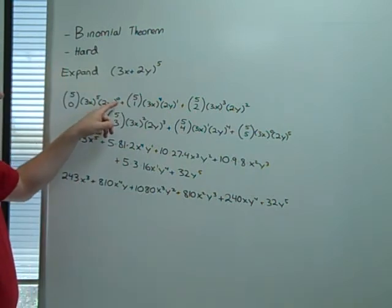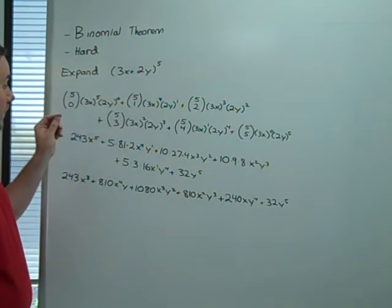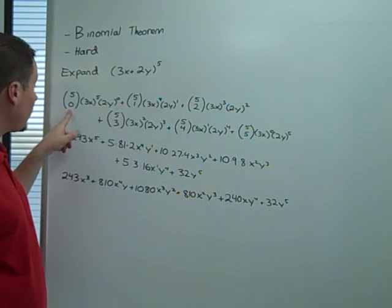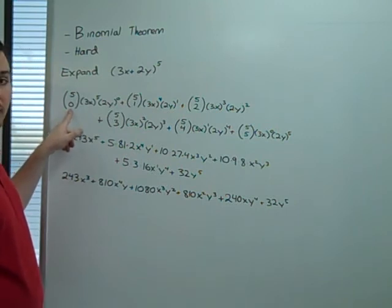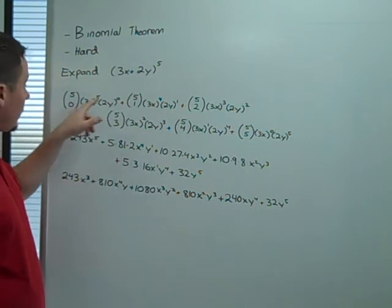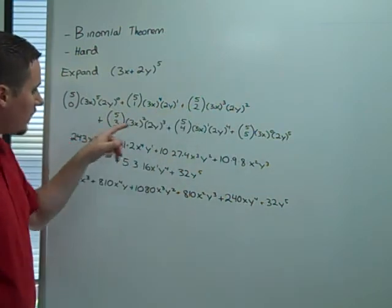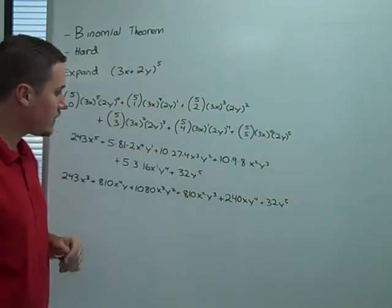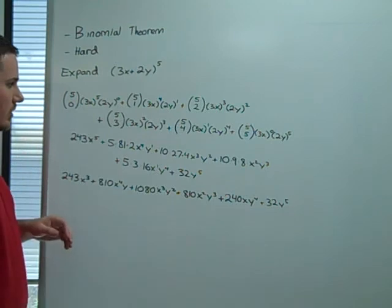Likewise, all of the exponents on the 2y term are achieved from getting the, from taking the bottom of the choose factor. So 0, 1, 2, 3, 4, 5. Then it's just a matter of simplification.